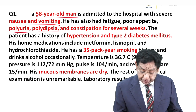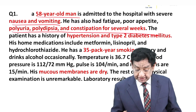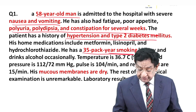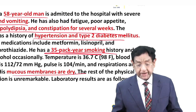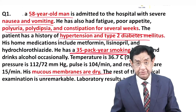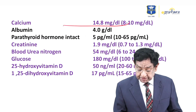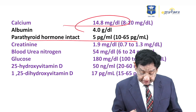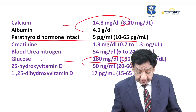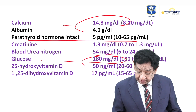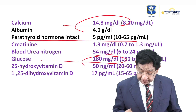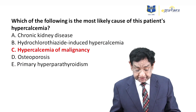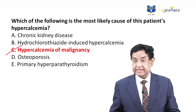The patient has polyuria, polydipsia, and constipation for several weeks. There is a history of hypertension and type 2 diabetes, and a very strong smoking history of 35 pack years. His mucous membranes are totally dry. Lab reports show calcium is at a much higher level, PTH level is reduced, glucose level is high, and urea/creatinine levels are on the higher side. Vitamin D levels are largely in the normal range. The most likely cause of this patient's hypercalcemia is hypercalcemia of malignancy.